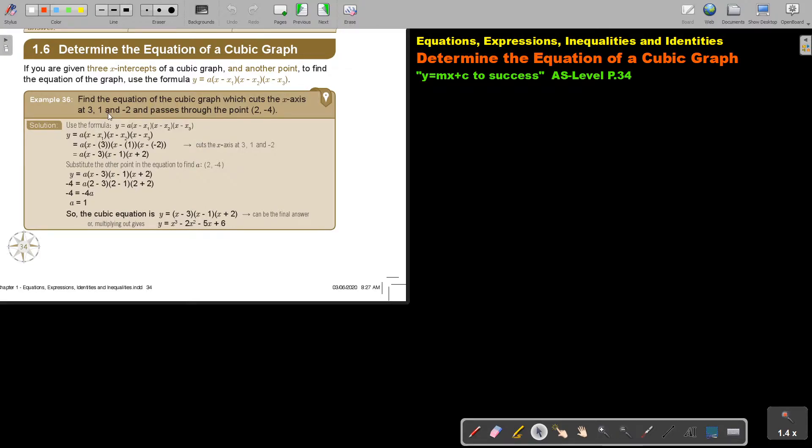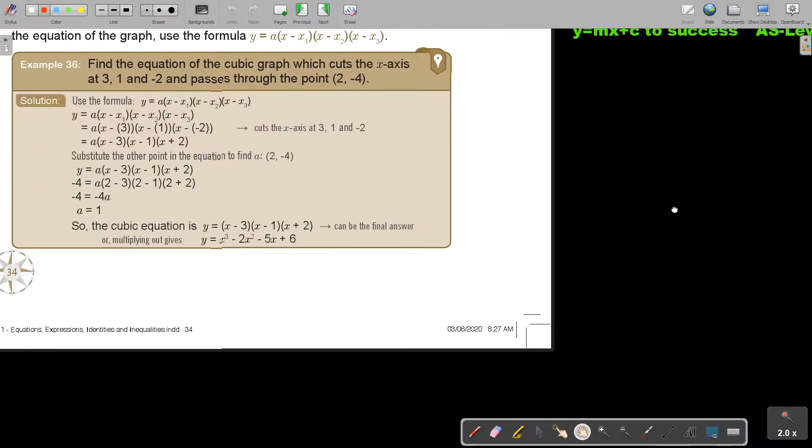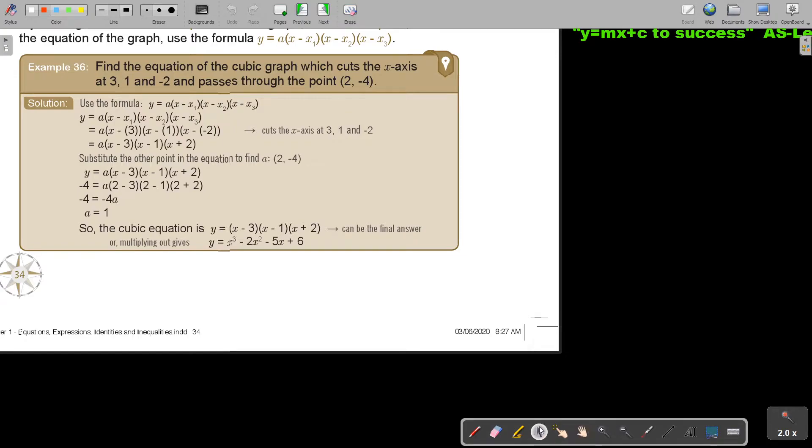So let's just look at this, make it bigger. Find the equation of the cubic graph which cuts the x-axis at 3, 1 and negative 2 and passes through the point. So use this formula. Then substitute the 3, the 1, the negative 2 in brackets. And there is the a. Then substitute the other point to get a. And then you can leave it like that or you can multiply out. It is not necessary.